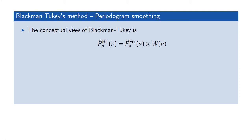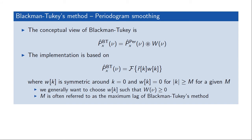Summarizing what we have learned: the conceptual view of the Blackman-Tukey method is that we take a periodogram estimate and average it in the frequency domain. The actual implementation takes the autocorrelation estimate and applies a window to the data before taking its Fourier transform. You want to choose this window to be symmetric around k equal to zero so that the Fourier transform of the function is real-valued, since our estimate of a power spectrum must be a real-valued function.